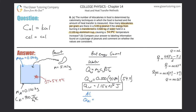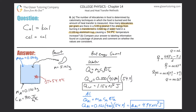Now for the aluminum: Q_aluminum = m × c × ΔT. The mass is 0.100 kg as given in the problem, the specific heat of aluminum is 900 J/(kg·°C) — you may need to look that up — and the temperature change is again 54.9°C. So Q_aluminum = 0.100 × 900 × 54.9, which gives approximately 4,941 joules, or about 4.94 × 10^3 joules.